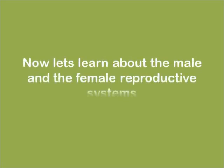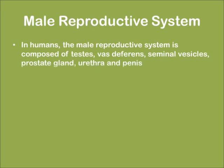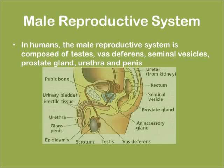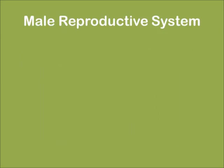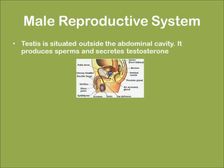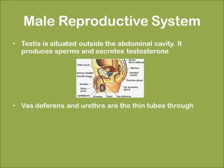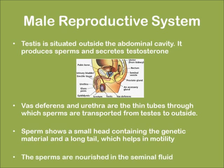Now let's learn about the male and female reproductive systems. Starting with the male reproductive system. In humans, the male reproductive system is composed of the testis, vas deferens, seminal vesicles, prostate glands, urethra, and the penis. The testis is situated outside the abdominal cavity; it produces sperms and secretes testosterone. The vas deferens and urethra are thin tubes through which sperms are transported from the testis to the penis. Sperms show a small head containing genetic material and a long tail, and are nourished in the seminal fluid.